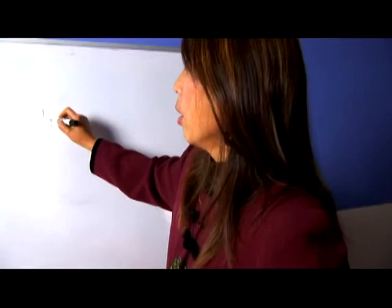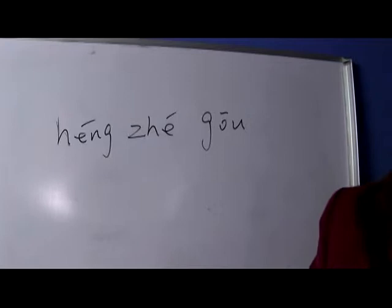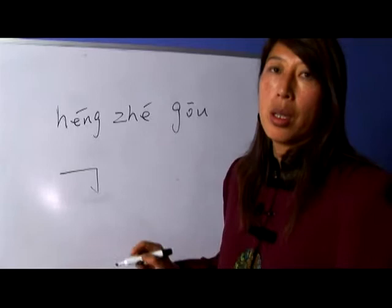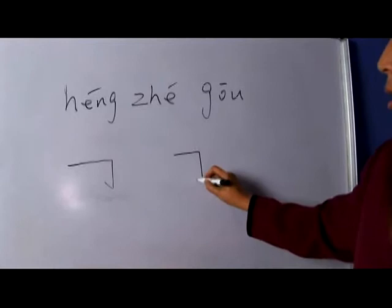This is also a combined stroke. It's a heng, zhe, go. So heng is horizontal, zhe is bend, and go is a hook. So heng, zhe, go, and you can see this stroke in characters such as power, li, go.